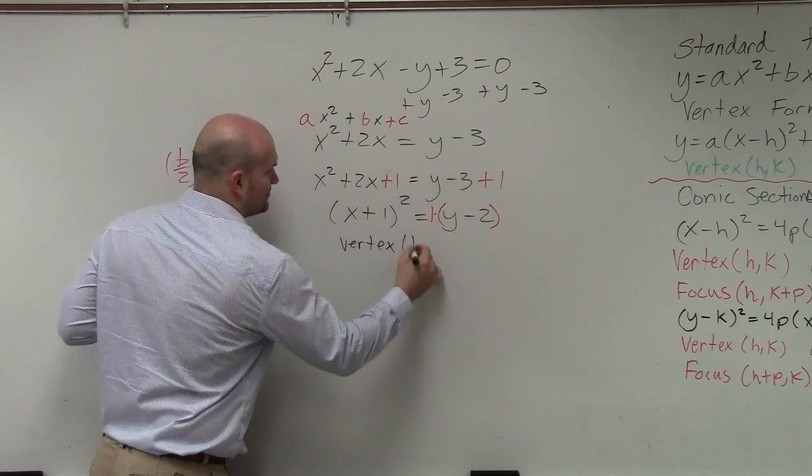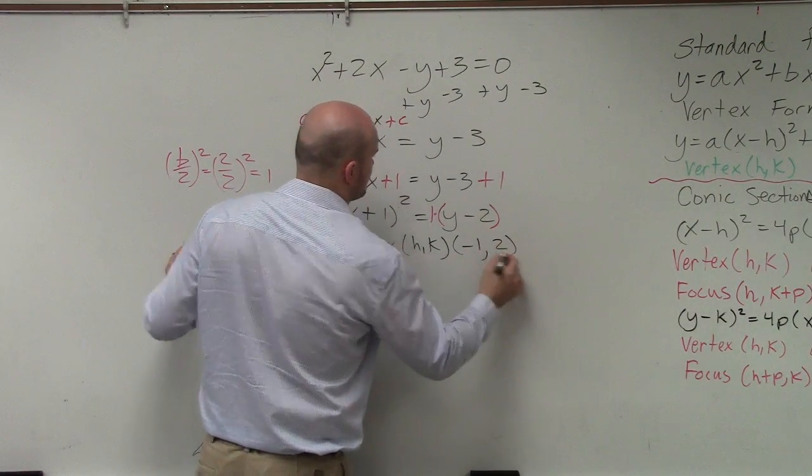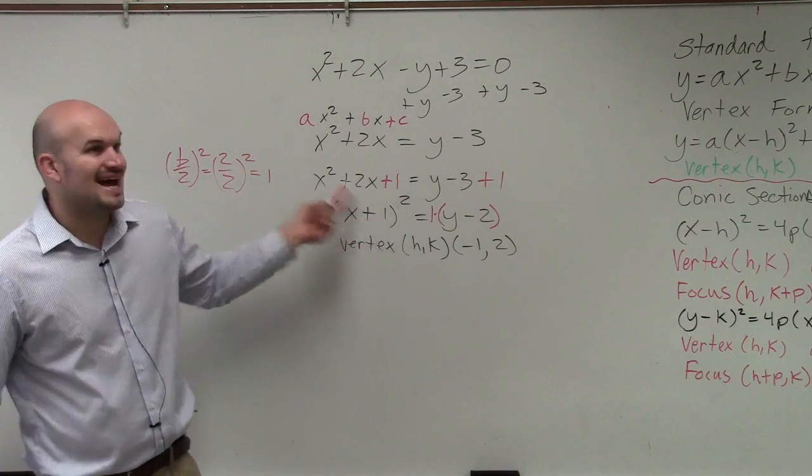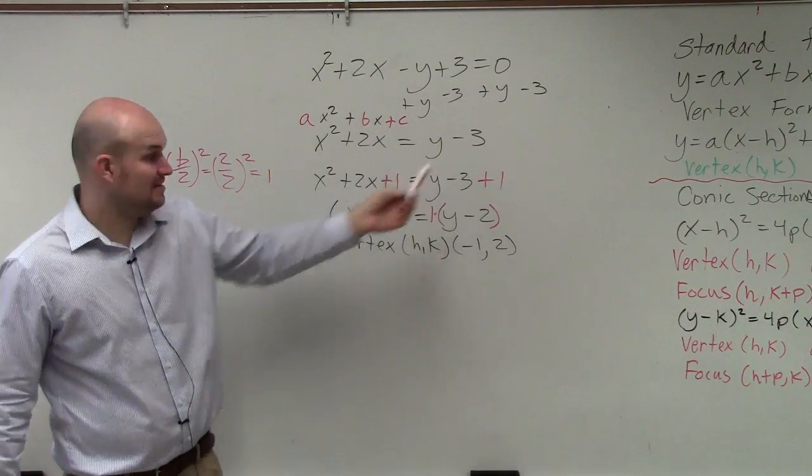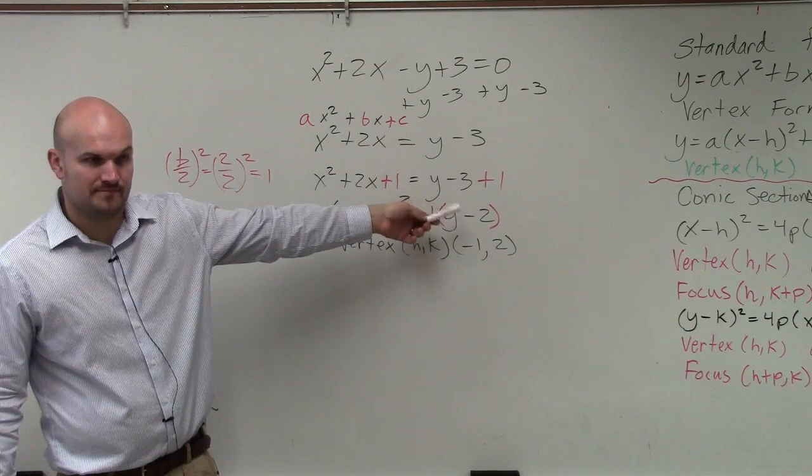Vertex is h comma k. So in this case, it's going to be negative 1, 2. Notice how it's x opposite of h, x opposite of k. So it's opposite of the 1, opposite of negative 2. Do you ever see that?